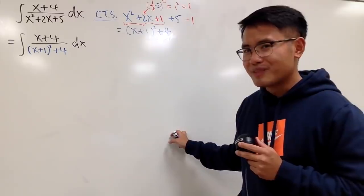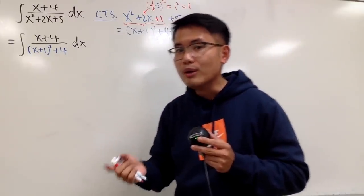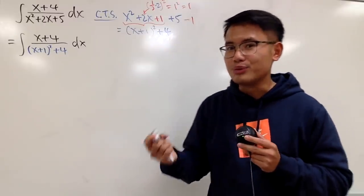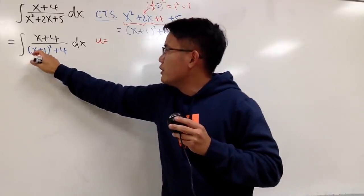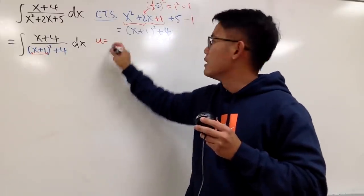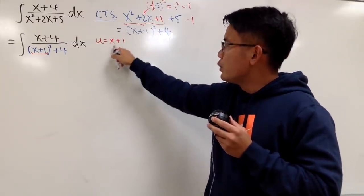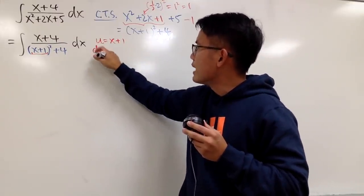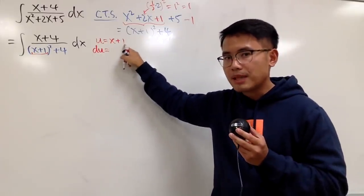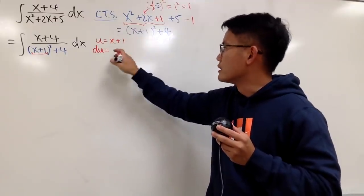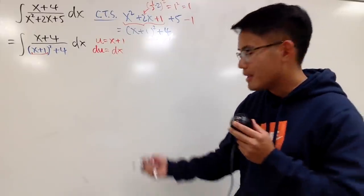Let u equal the inside function, which is x plus 1. Then we do the usual business: if u equals x plus 1, differentiate both sides, and we get du equals the derivative of x plus 1, which is just 1, times dx. So du equals dx. That's pretty much the ingredients.